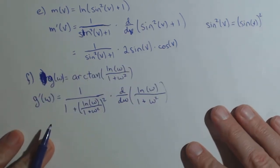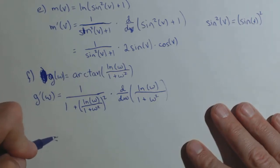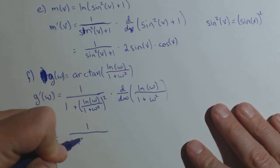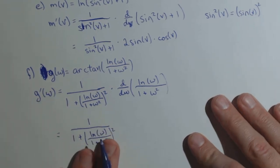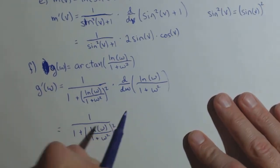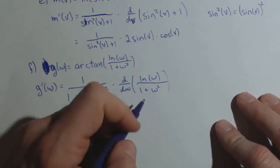This is going to be a quotient rule. So one over one plus natural log of w over one plus w squared squared. This part's already done. We've taken that derivative. Here's what we have left to do using a quotient rule.